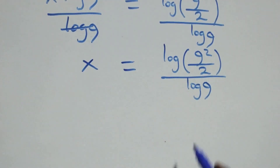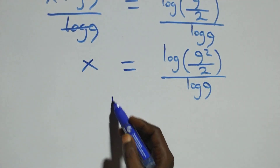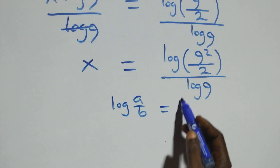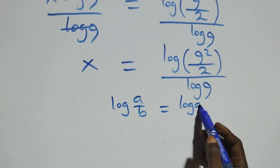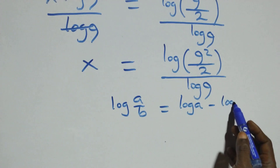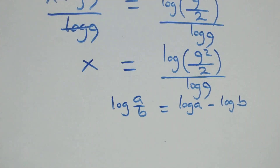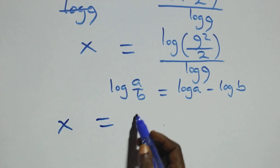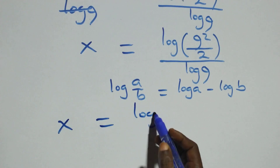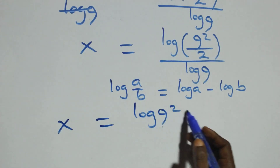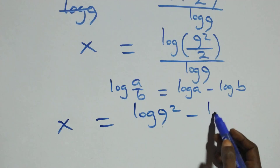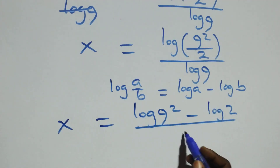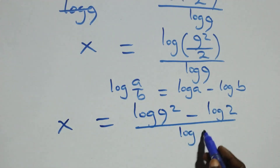We apply the law of logarithms: log(a/b) equals log a minus log b. So what we have here becomes x equals (log 9 squared minus log 2) over log 9.